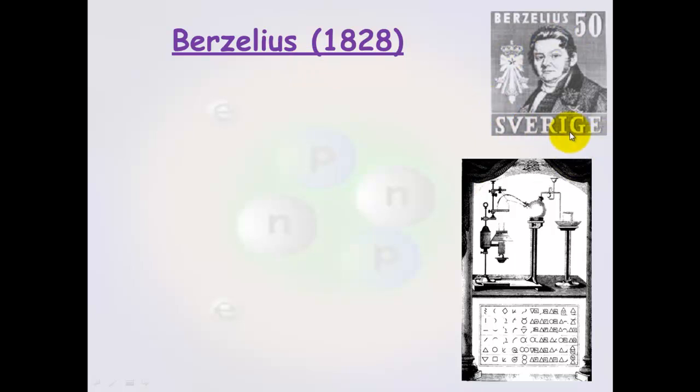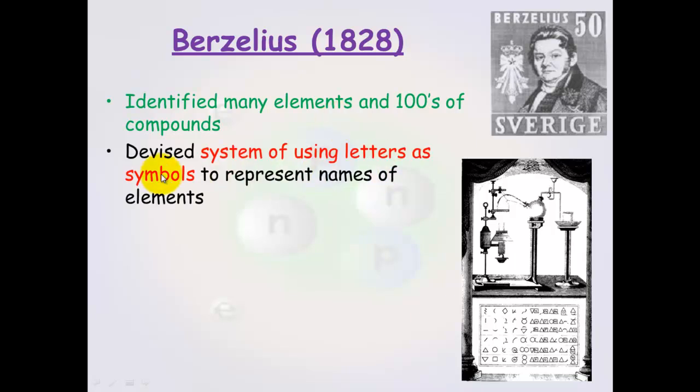Berzelius was so famous he made it onto a stamp. He identified many elements and hundreds of different compounds. And he also devised the system of using letters as symbols to represent the elements. And this is how he started here. He also calculated accurate relative atomic masses. And these were based on the mass of oxygen.